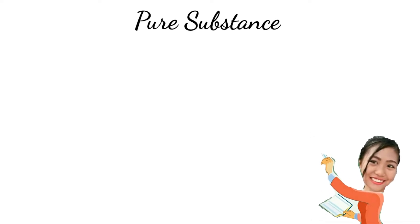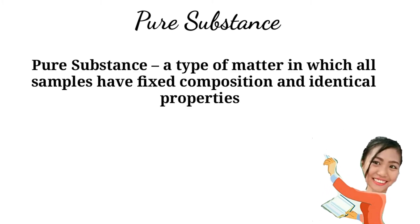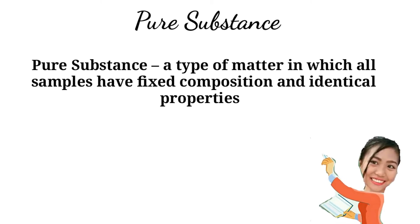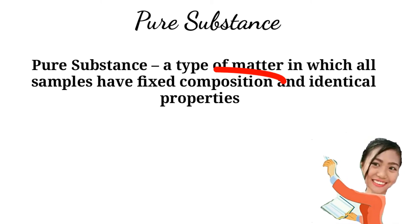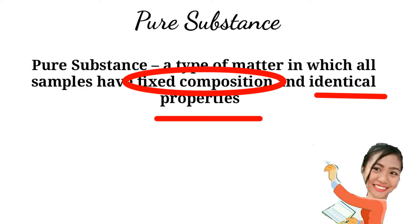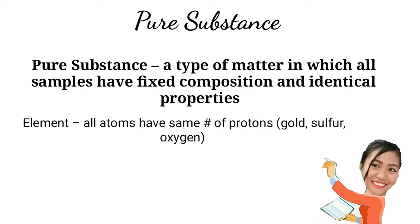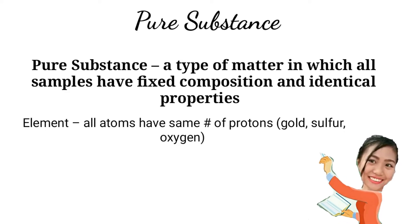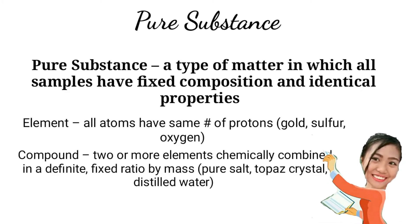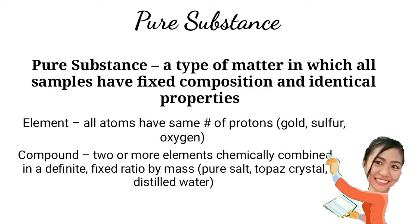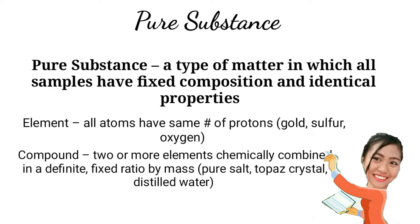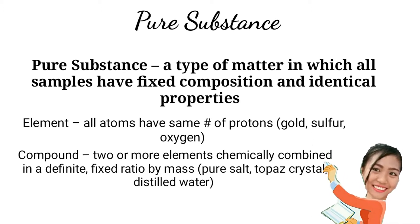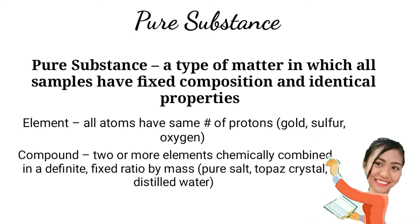A pure substance is a type of matter in which all samples have fixed composition and identical properties. In elements, all atoms have the same number of protons — like gold, sulfur, and oxygen. A compound is two or more elements chemically combined in a definite, fixed ratio by mass, like pure salt.